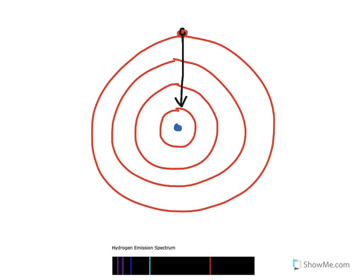So when an emission spectrum forms, what's happening is that the electron is falling towards the nucleus, and it then emits light.